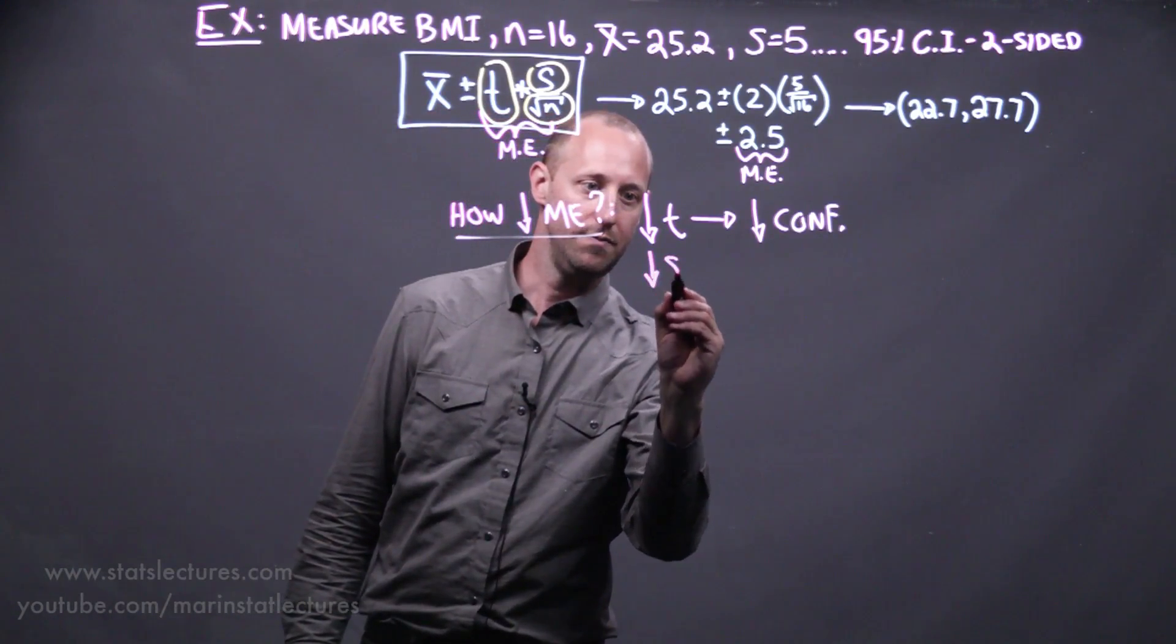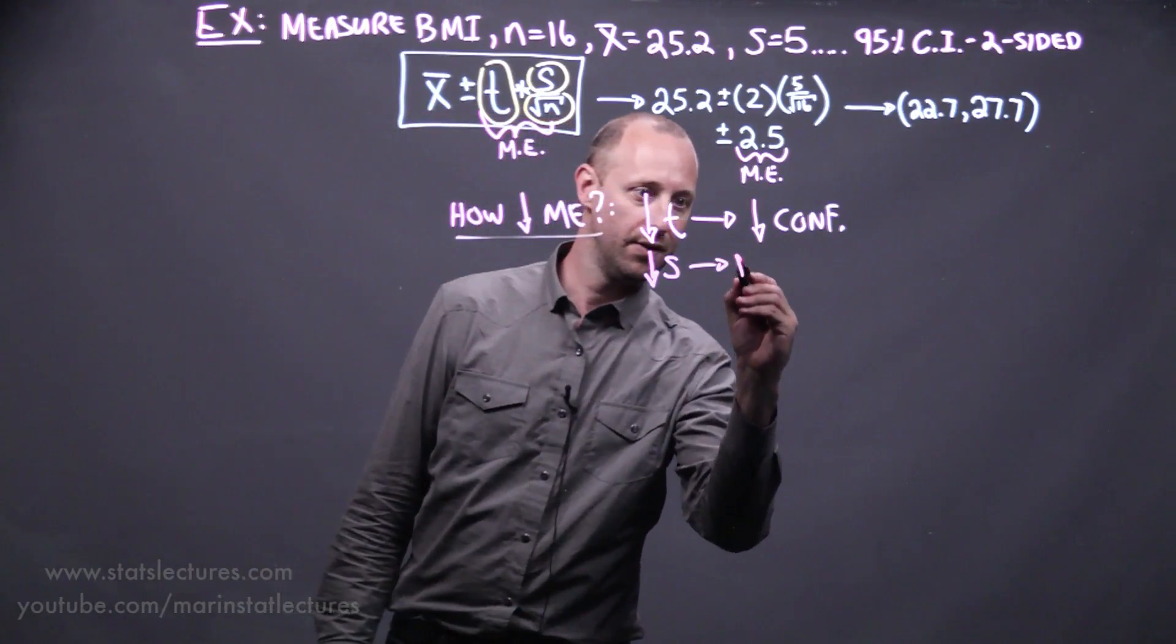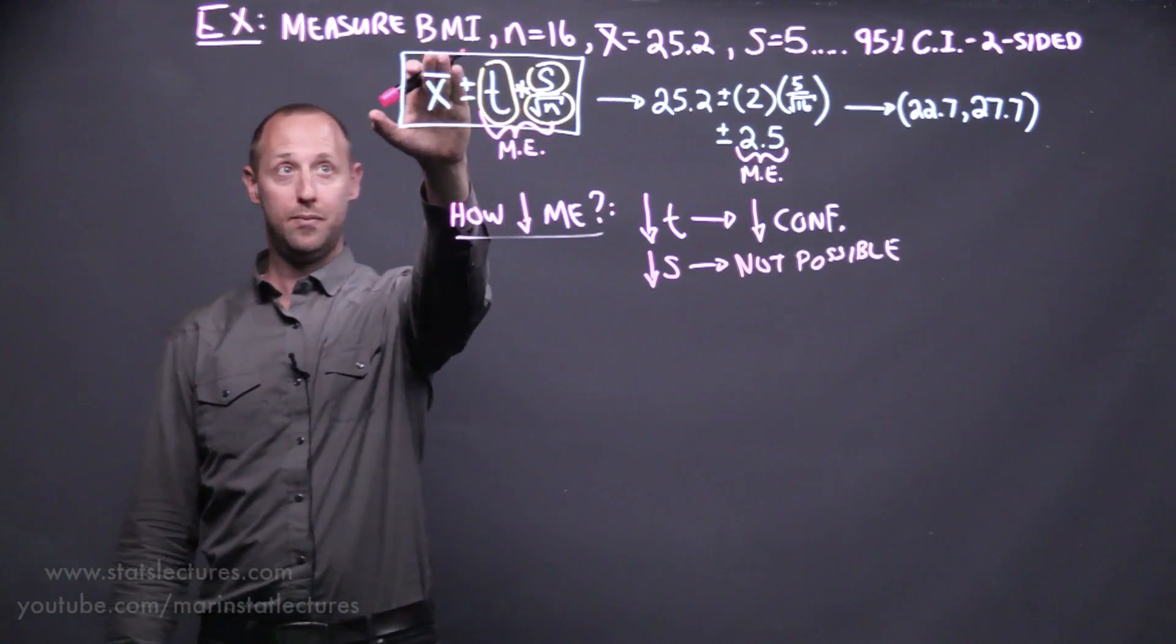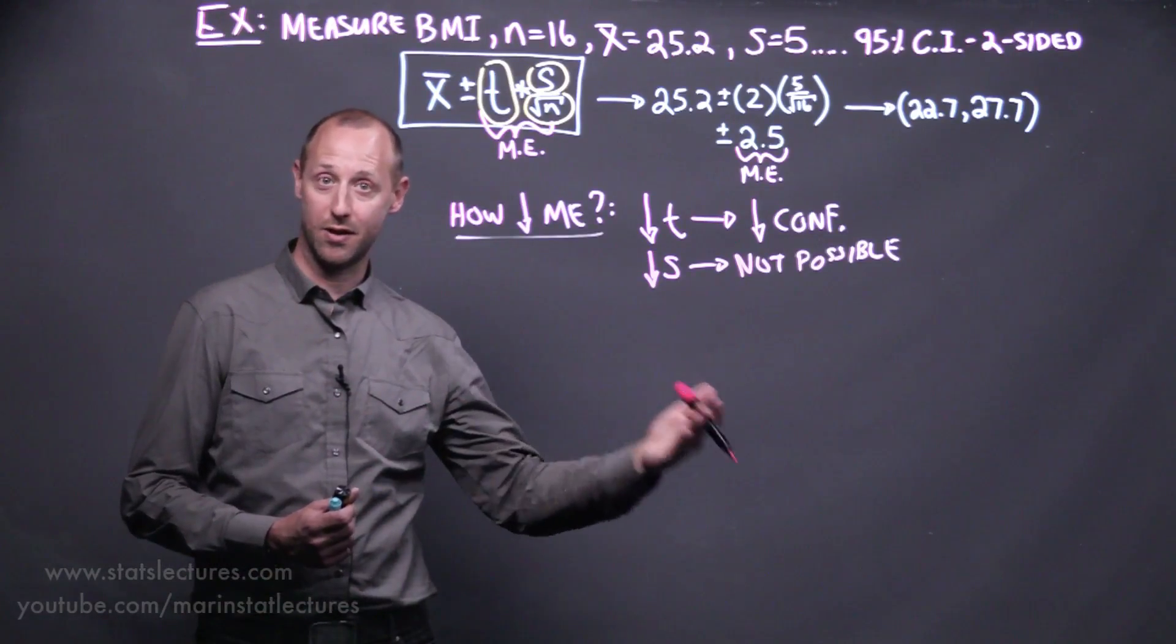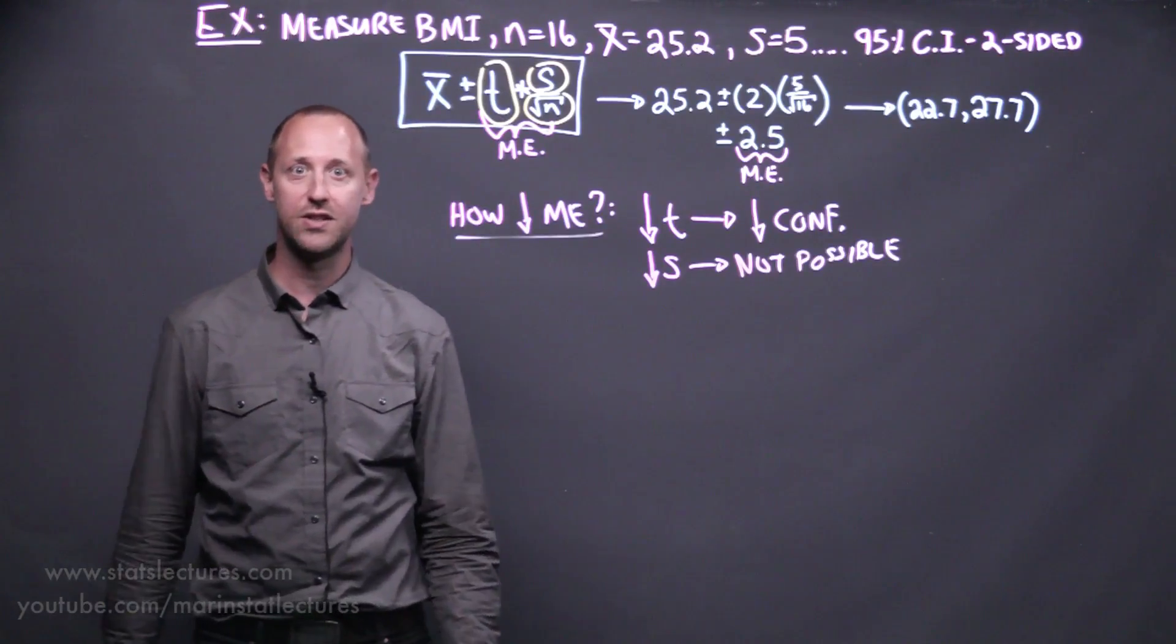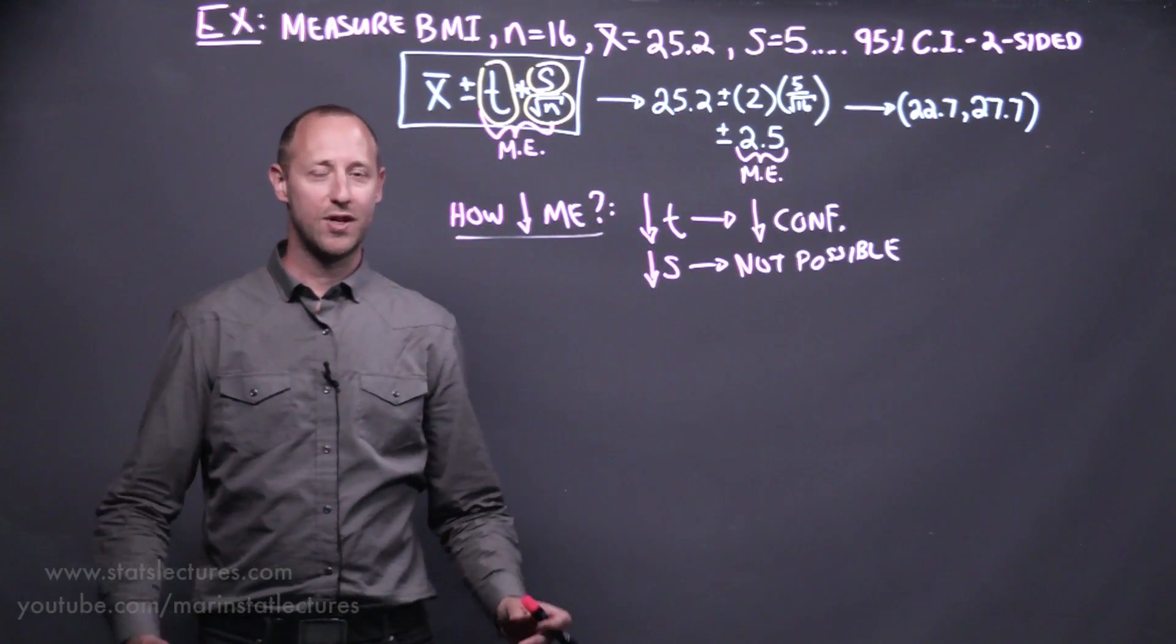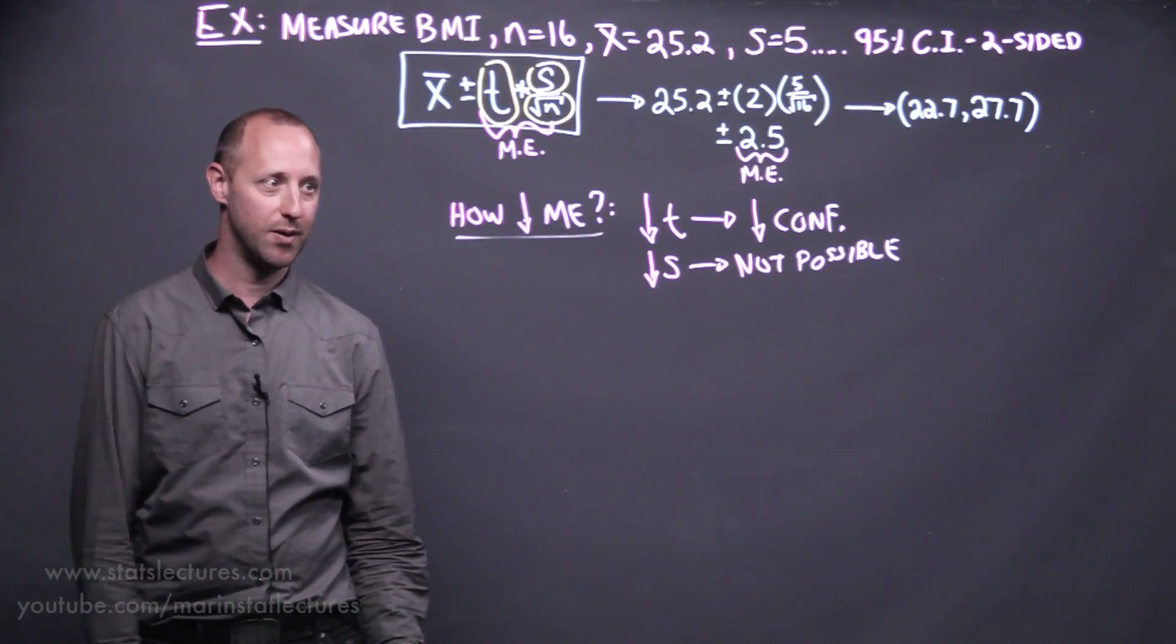Mathematically, we can also think about decreasing the standard deviation. But this here is not possible. So if you think about it, here we're looking at people's BMIs and there is some natural variability in that. Some people's BMIs are higher, some are lower. If you remember the sample standard deviation is trying to capture on average how far the individual's BMI move from the mean. So there's no way for us to make people's BMI more similar. There's natural variability and we can't do anything about that.